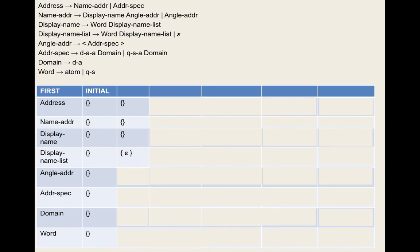After working through all passes, the calculated first sets are: address = {dot-atom-at, quoted-string-at, less-than, atom, quoted-string}; name-address = {less-than, atom, quoted-string}; display-name = {atom, quoted-string}; display-name-list = {epsilon, atom, quoted-string}; angle-address = {less-than}; address-specification = {dot-atom-at, quoted-string-at}; domain = {dot-atom}; word = {atom, quoted-string}.